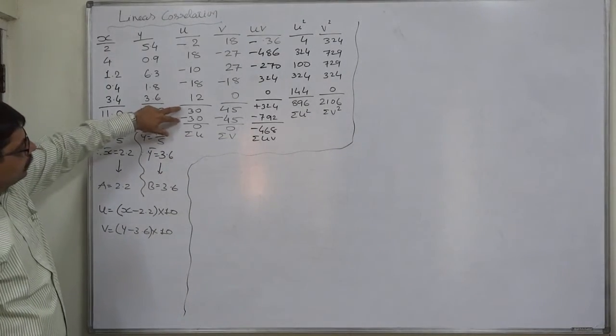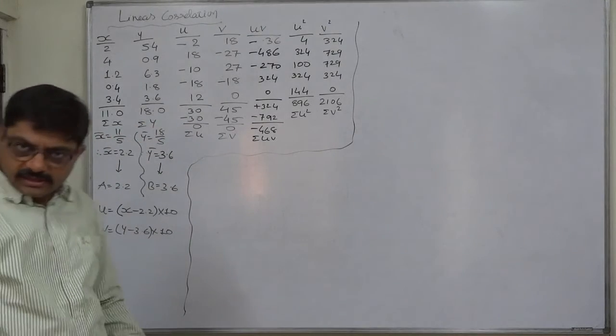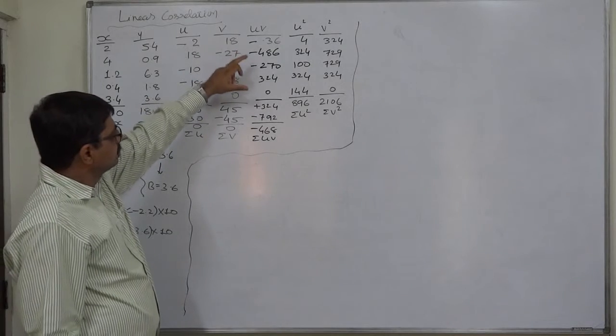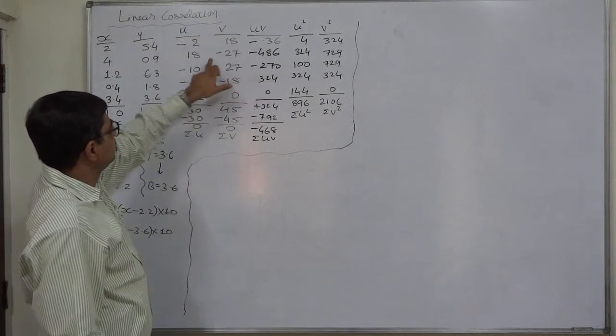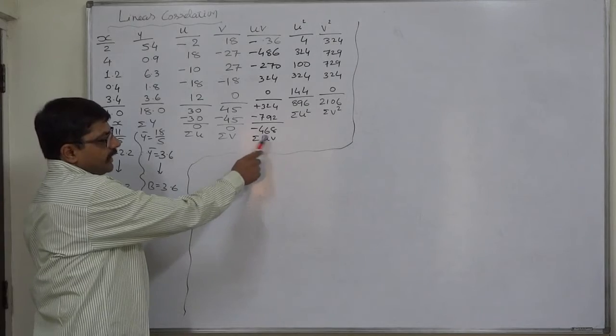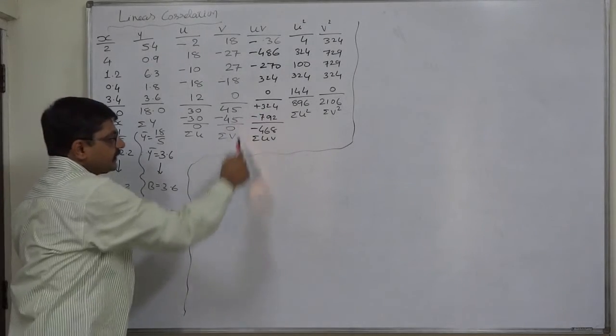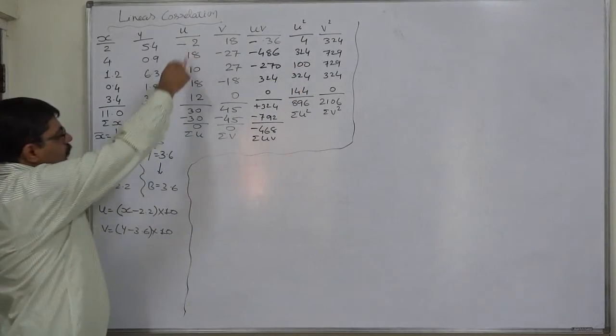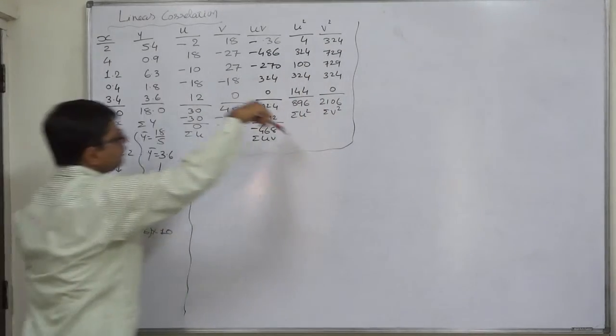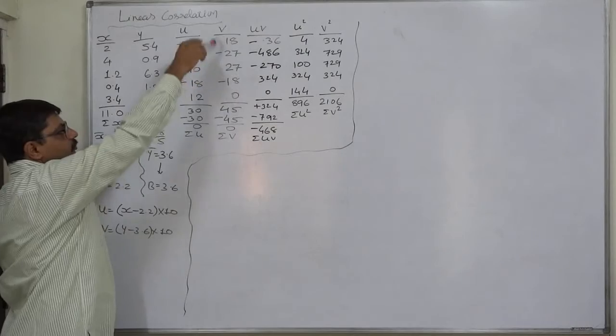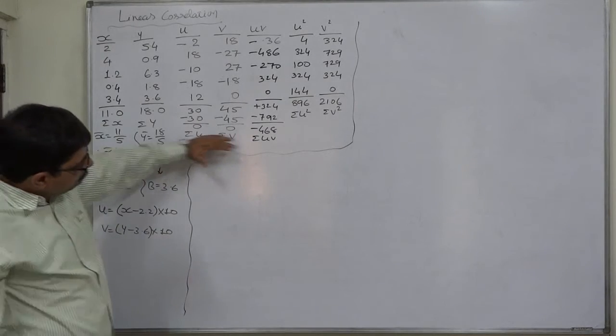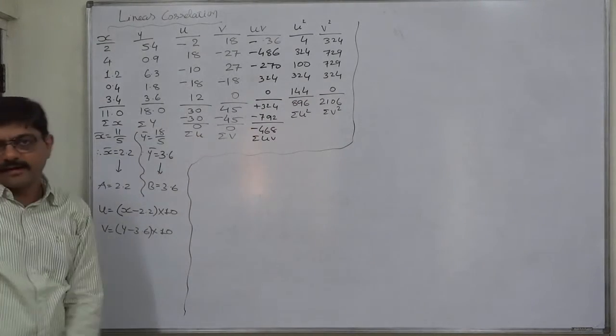Multiplication of u and v gives us uv: minus 2 into 18, that is minus 36; 18 into minus 27, minus 486, and so on. Ultimately we get the total minus 468. u square, that means squared values of all the values of u individually, and summation is 896. Similarly, v square summation is 2106. Now we can substitute all these five summations in our formula.